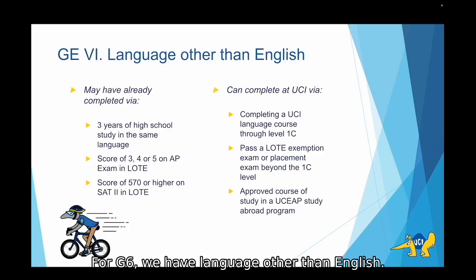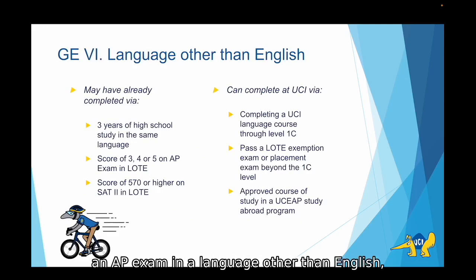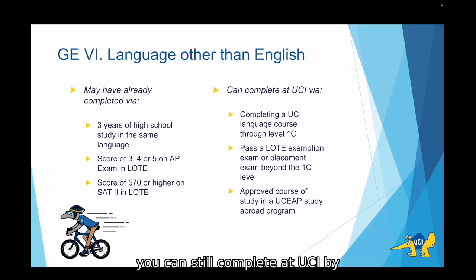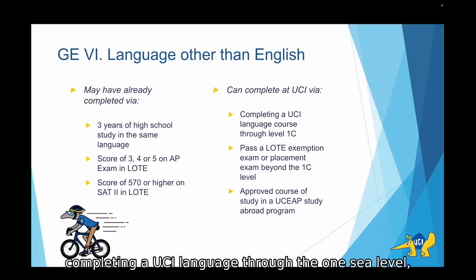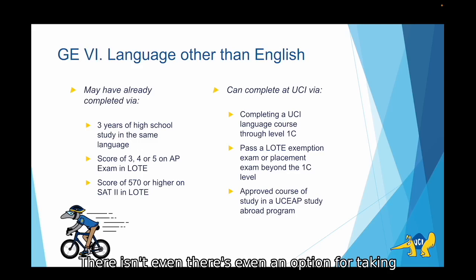For GE 6, we have Language Other than English. Many of you may have already completed this GE prior to coming to UCI. This could be through three years of high school study in the same language, a score of three, four, or five on an AP exam in a language other than English, or a score of 570 or higher on an SAT II test for a language other than English. If you haven't completed this before coming to UCI, you can complete it by taking a UCI language through the 1C level, passing a language other than English exemption exam, placing into a level higher than 1C through a placement test, or taking an approved course of study in a UCEAP study abroad program.